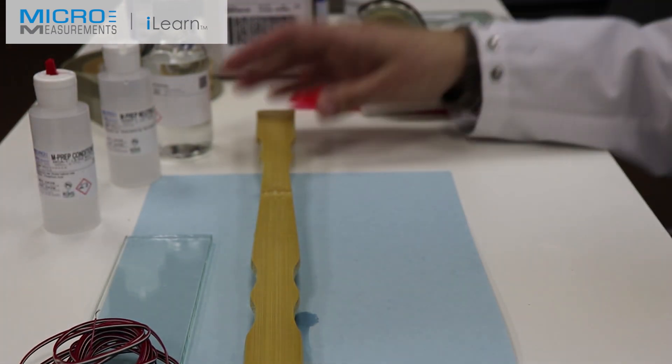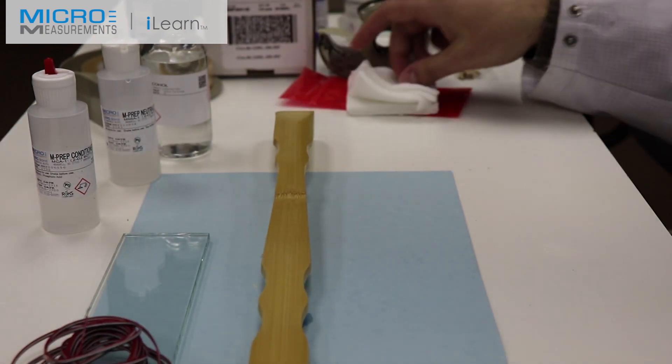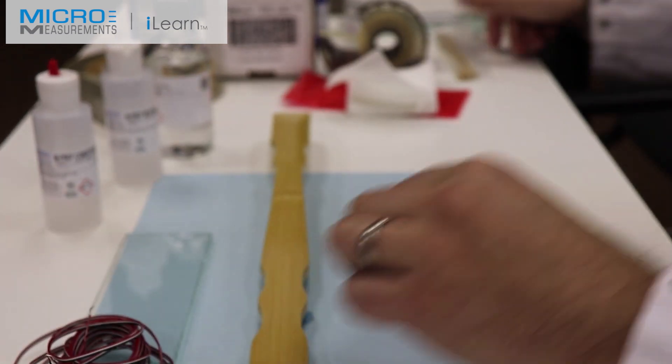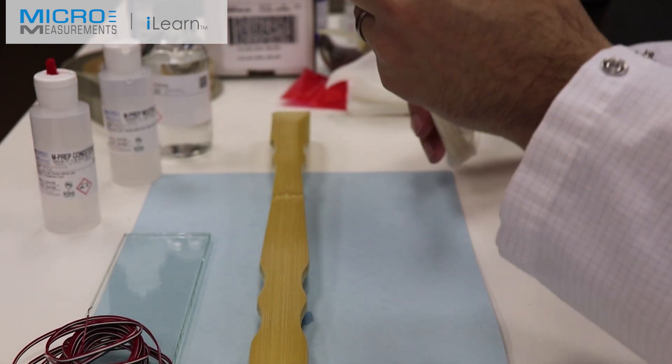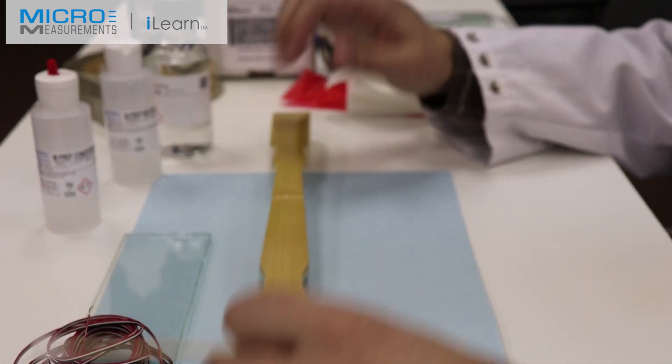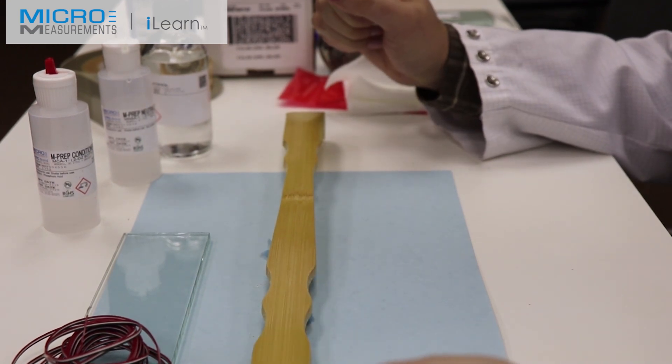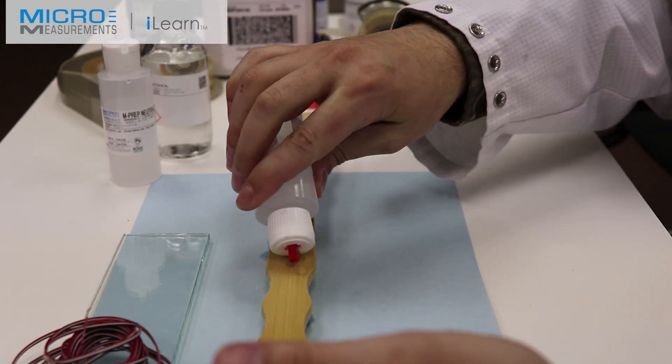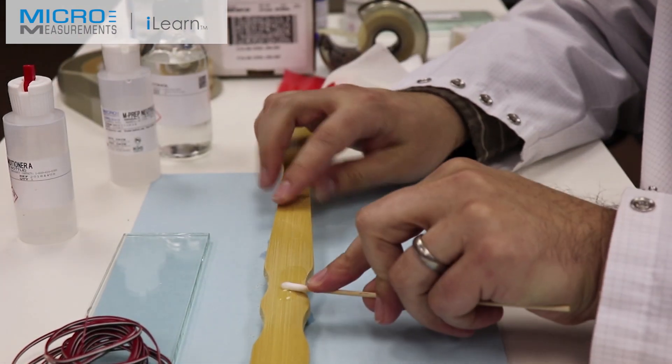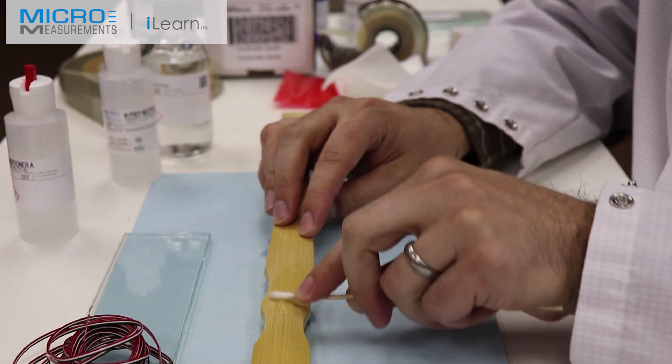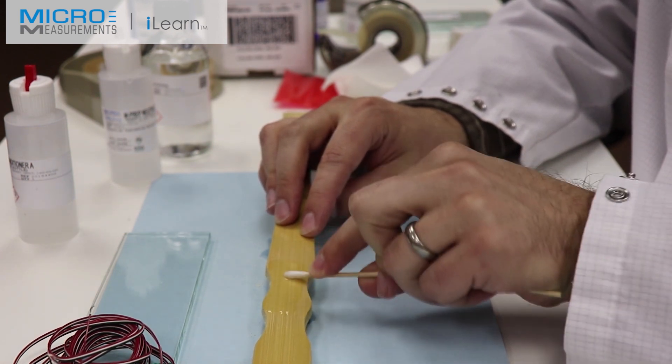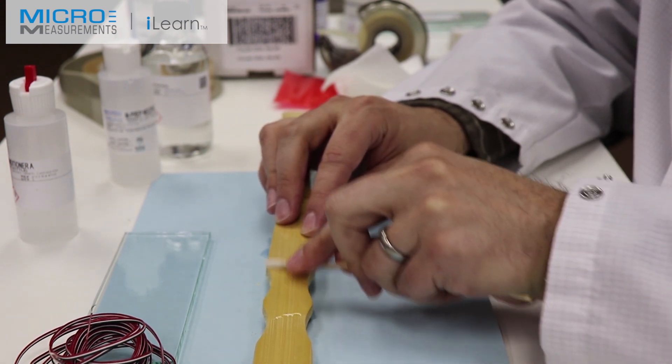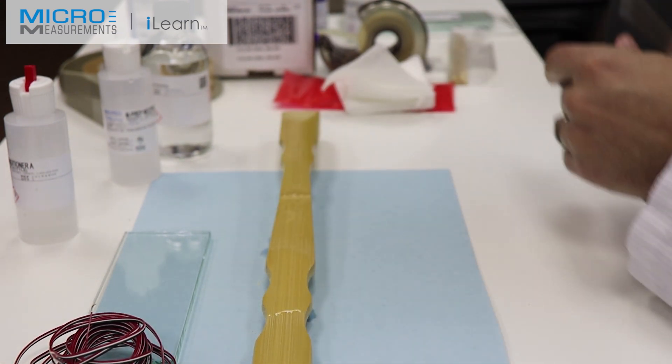Now we'll take our cotton tip applicator. We're going to leave it at 320 because if we go to 400 it's going to polish more than anything else. He's going to take the Conditioner A, flood the surface, and with a cotton tip applicator scrub the surface, loosening any organics that might have been put into the wood. A clean dry gauze sponge, fold it into quarters, and a single wiping motion to dry the surface.